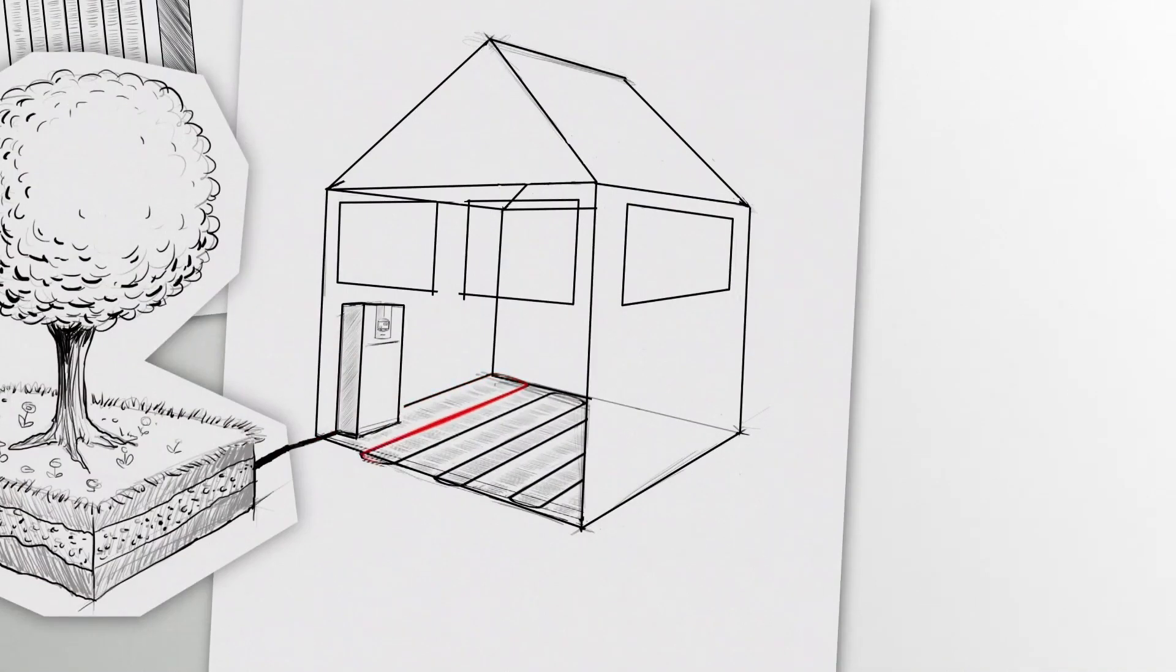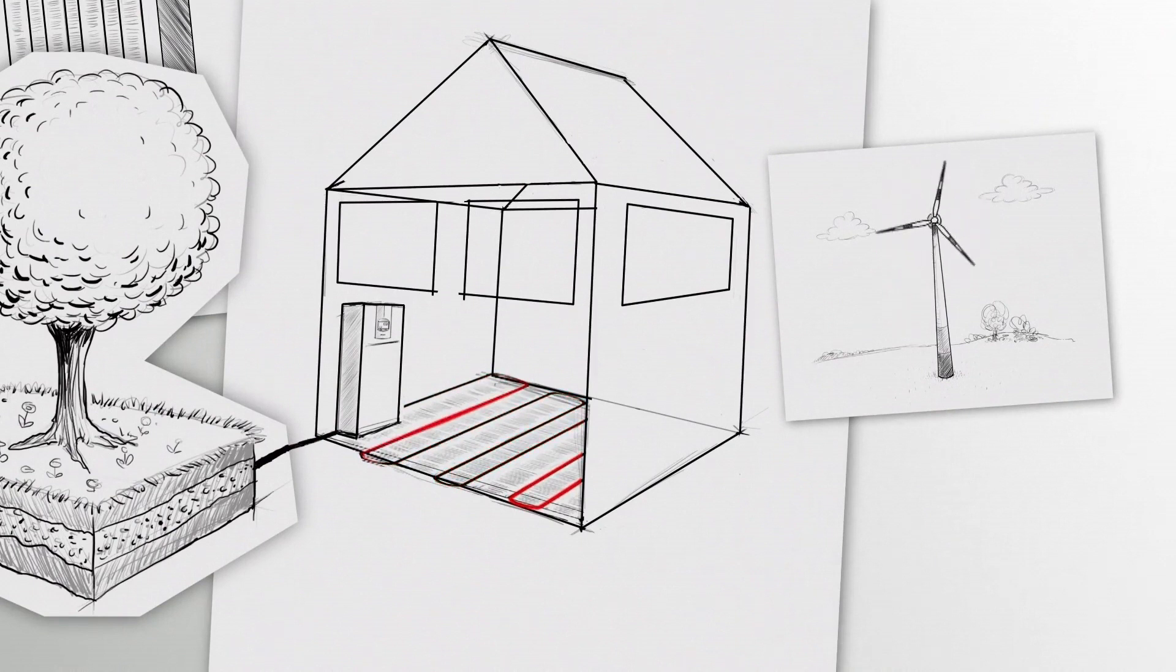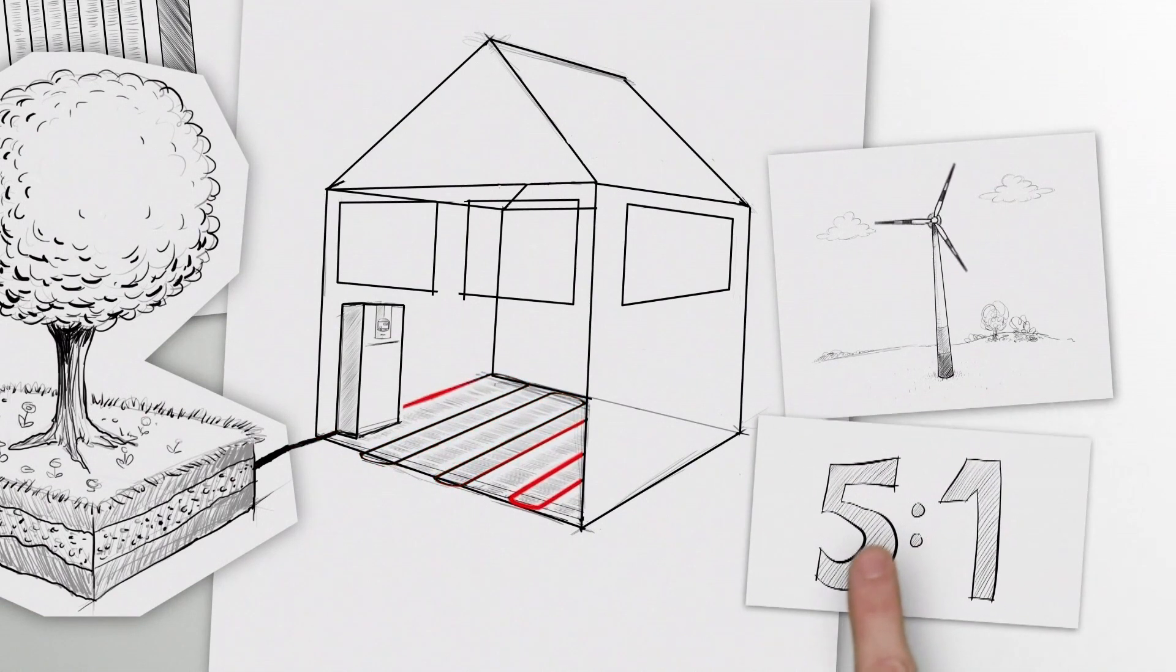In order for the heat pump to work, it needs energy. You can roughly calculate the energy consumption in the ratio five to one, i.e. for every part of operating power, you gain up to five parts of free environmental energy.